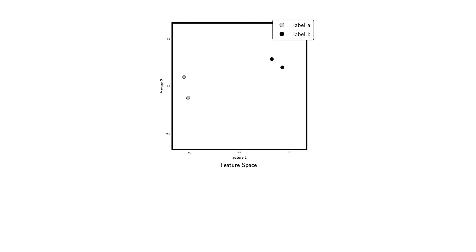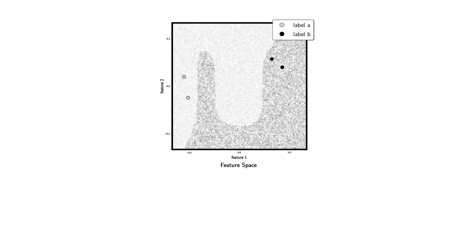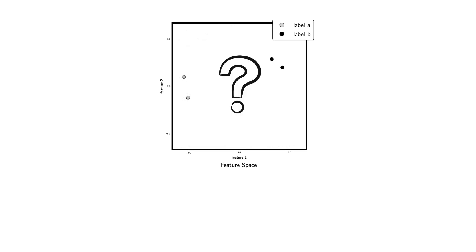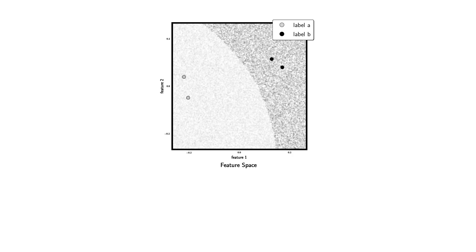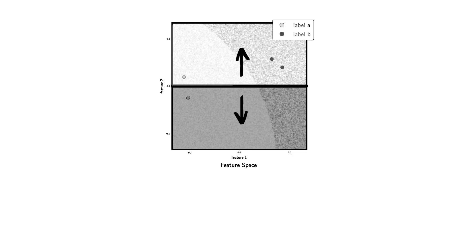We have two white points and two black points. The underlying distribution from which these points have been drawn could be anything. As this is a simulation, let's say the underlying distribution is known. Now let's look at a fixed decision boundary which says that all points on this side are white and all points on this side are black. This decision boundary is going to misclassify these three points, hence we colored them red.